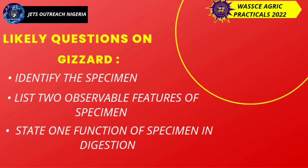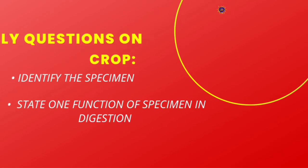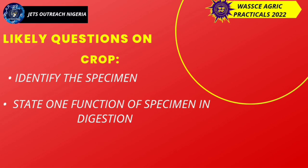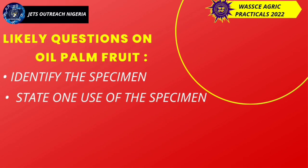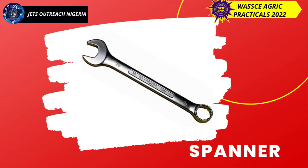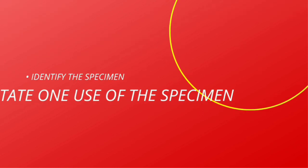Next is the crop. Identify the specimen, state one function of the specimen in digestion. Your answer: the specimen is involved in temporary storage of food. Next, oil palm fruits. Identify the specimen, state one use. Your answer: the specimen is used in the production of palm oil. Next, the spanner. Identify the specimen, state one use. The specimen is used to loosen or tighten bolts and nuts.